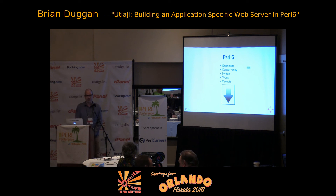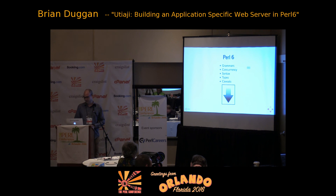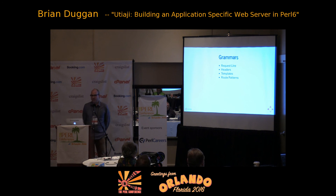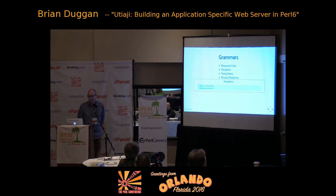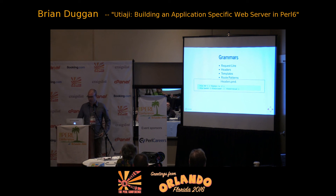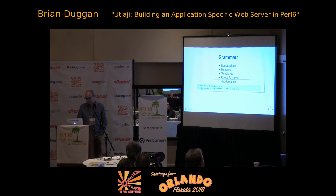Let's go over to Perl 6 and see what some of the interesting parts are that are relevant to this application. Grammars are very useful to handle a number of aspects. The first is the request line that comes in — you have a verb, a path, and the version, so there's a request line grammar. Headers also — I think this is one of the examples in the documentation. They're name-value pairs; you have to be careful about the characters in them, but it's a fairly straightforward grammar to implement.